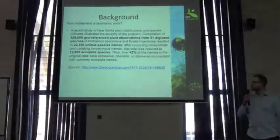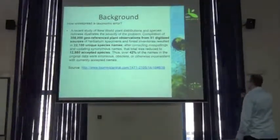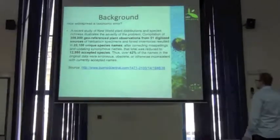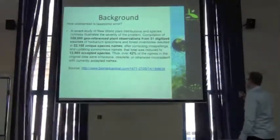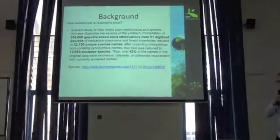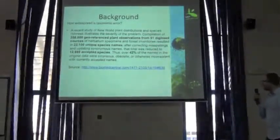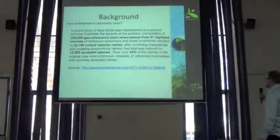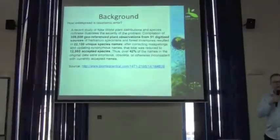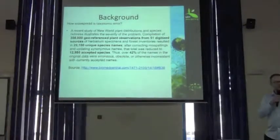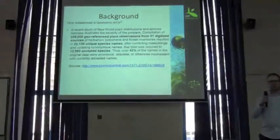So, first, a little background. How widespread exactly is this taxonomic data problem? Well, in a recent study that was conducted, out of 308,000 geo-referenced plant observations from 51,000 different sources across the inventory zone, there were 22,100 unique species names. After correcting the spellings and updating synonymous names, that total was reduced down to 12,980. So that's a lot of dirty data — about 42% of the names in the original data were erroneous or obsolete.